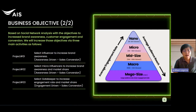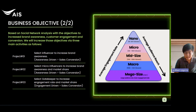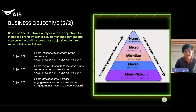It is known that famous influencers can reach many people based on social network analysis. We will increase their three main activities. First, select influencers to increase brand awareness. Second, select micro-influencers to increase brand awareness and market share. Last, select gatekeepers to increase engagement rate and market share.